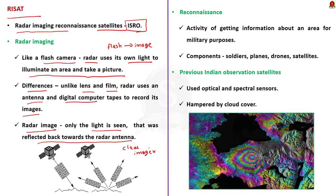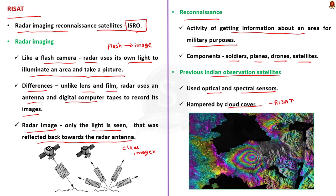Reconnaissance is the activity of getting information about an area for military purposes, using soldiers, planes, drones, satellites, etc. Previous Indian observation satellites relied primarily on optical and spectral sensors, which were frequently hampered by cloud cover, limiting all-weather surveillance. To overcome this, the RISAT series was planned. RISAT satellites are India's first all-weather Earth observation satellites, providing surveillance using synthetic aperture radars that rely on radar imaging technology.